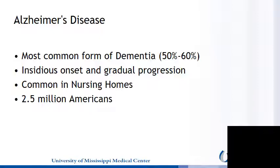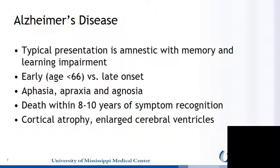Alzheimer's Disease is the most common form of dementia, representing 50 to 60% of all cases. It has an insidious onset and gradual progression, and is very common in nursing home populations. The typical presentation is amnestic, with memory and learning impairment. There is early onset, occurring under age 65, versus late onset.